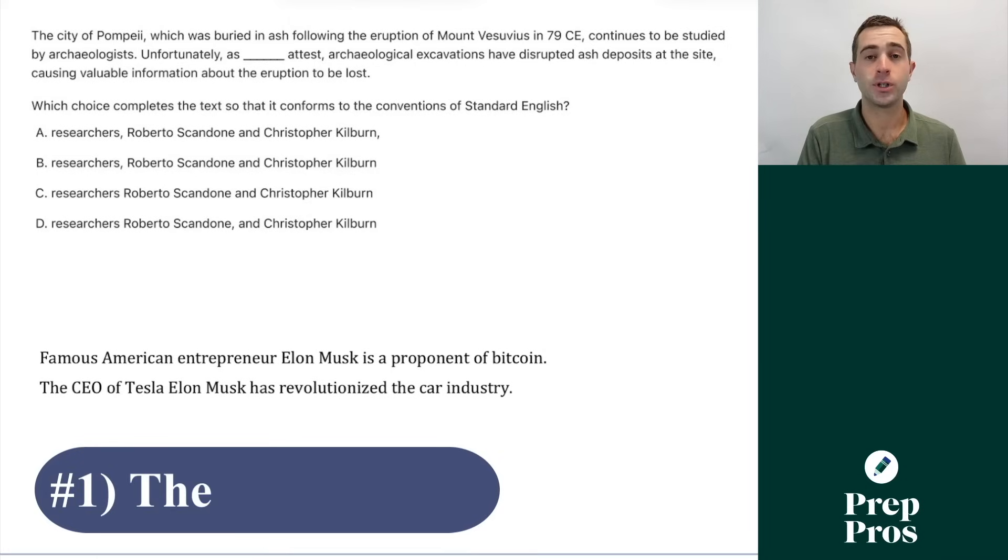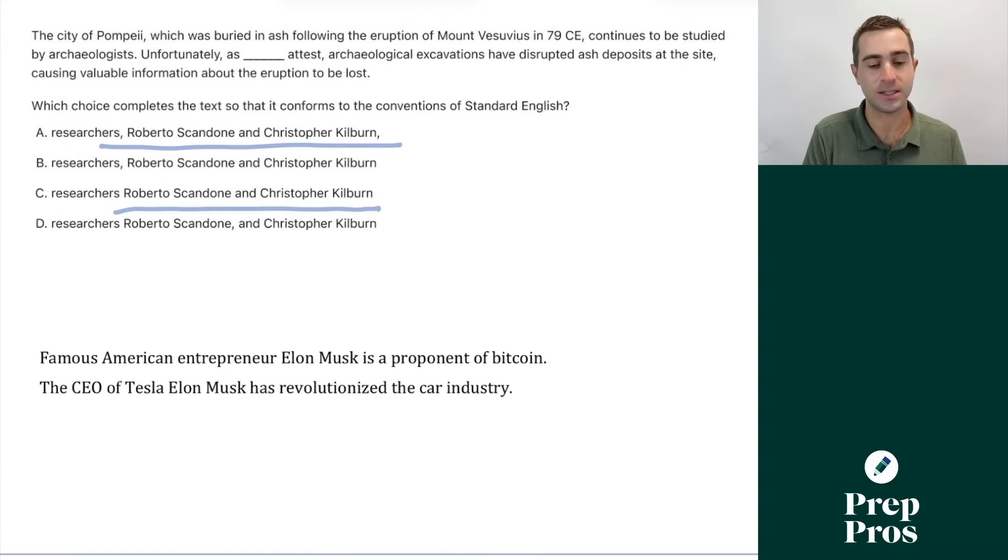The first concept you're going to see on your digital SAT are punctuation questions, testing your ability to understand whether information is necessary or unnecessary for the sentence. If it's unnecessary, we have to put commas around it. If it's necessary, we don't want to put commas. One of the most commonly tested ones is the names rule.